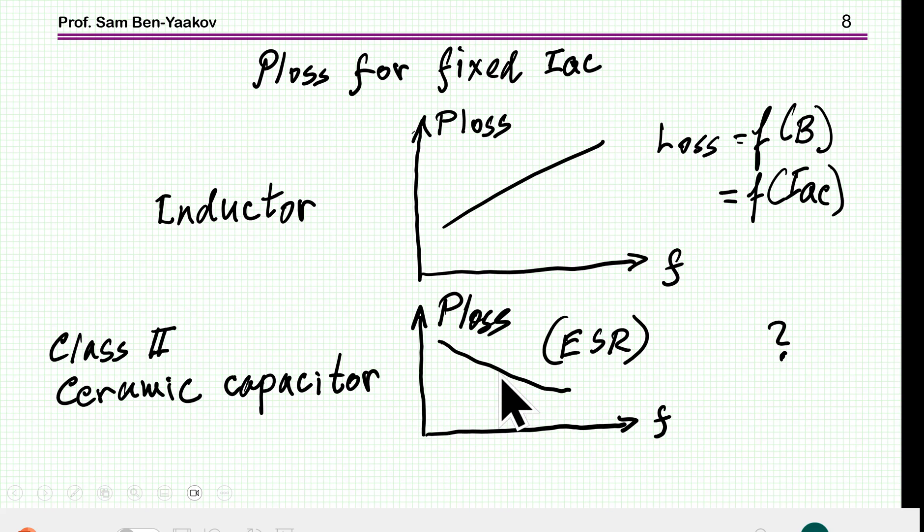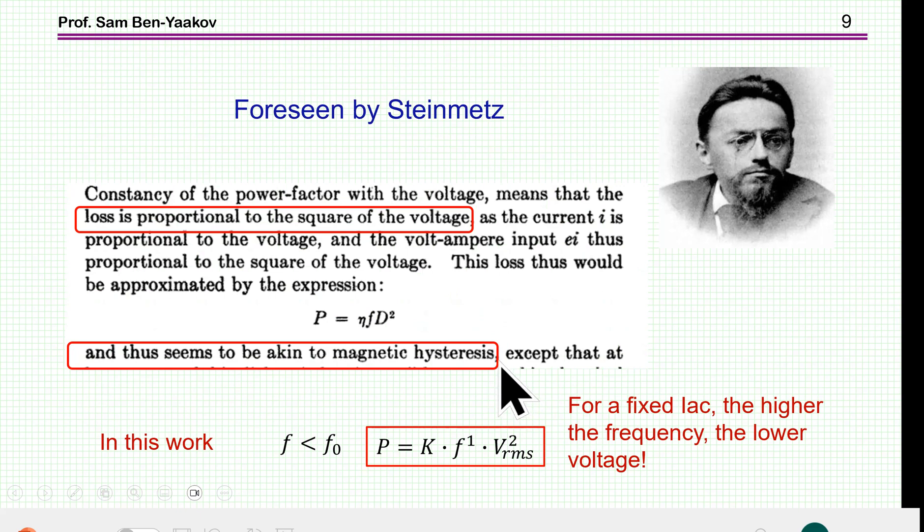Well, again, Steinmetz touched on this problem too. He predicted that the losses of a dielectric material around which a capacitor is being built should be of this form, frequency times the displacement squared, which can be translated for a given structure to voltage. So, Steinmetz predicted that the losses of a dielectric material should be of this form, and that is proportional to the voltage.